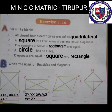Exercise 1.1a, Fill in the blanks. First: all closed four-sided figures are called quadrilaterals. Second: a square has four equal sides and equal diagonals. Third: the opposite sides of a rectangle are equal. Fourth: a circle has no sides. Fifth: diagonals are equal in square and rectangle.